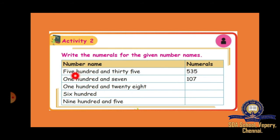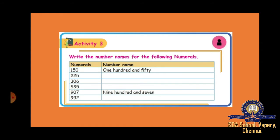First, they will give the number names and you have to write the number — for example, 535 and 107. This is the way you have to fill it. Next, they will give numerals and you have to write the number name — for example, 150 and 907.